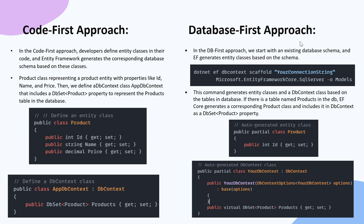In the Database First approach, you start with an existing database schema and EF Core generates entity classes based on that schema. You use a scaffold command, passing your connection string, and EF Core creates all the classes related to that database schema. The command generates entity classes and a DbContext class based on the tables in the database. For example, if there is a table named Products, EF Core generates a corresponding Product class and includes it in the DbContext as a DbSet of type Product.